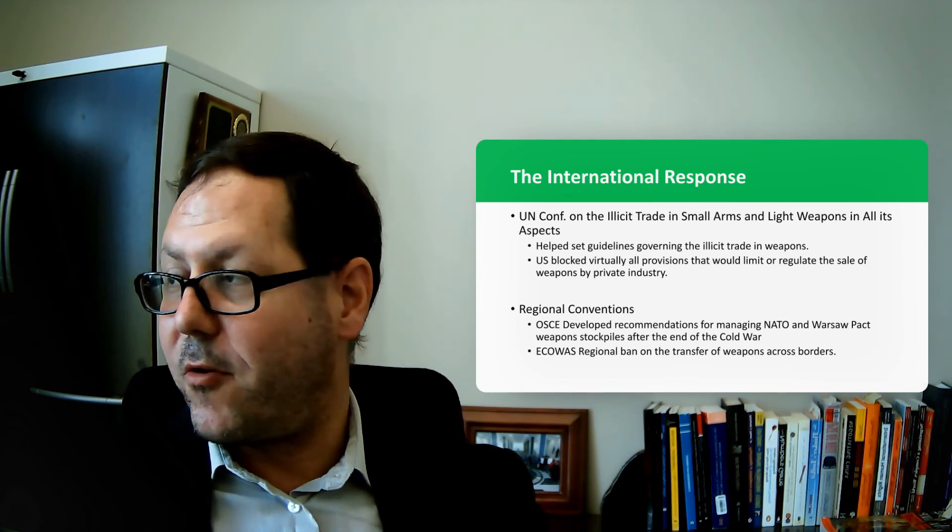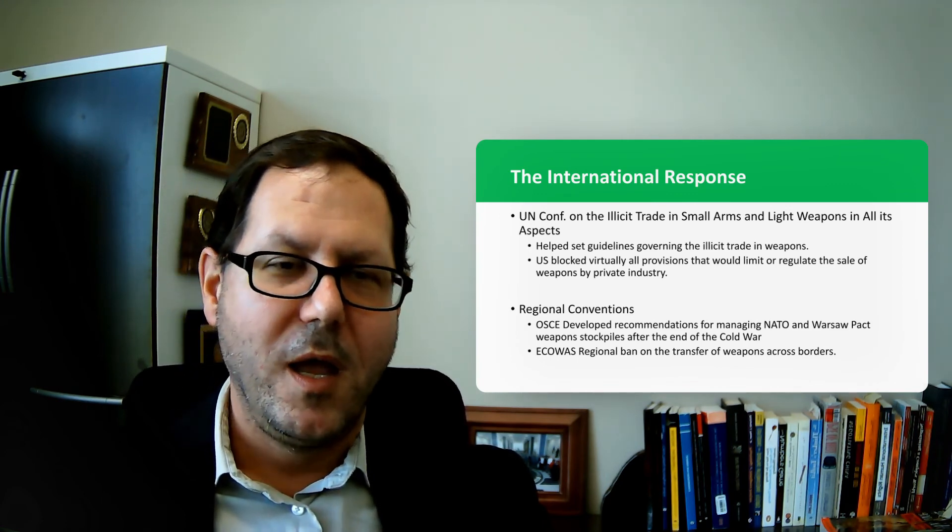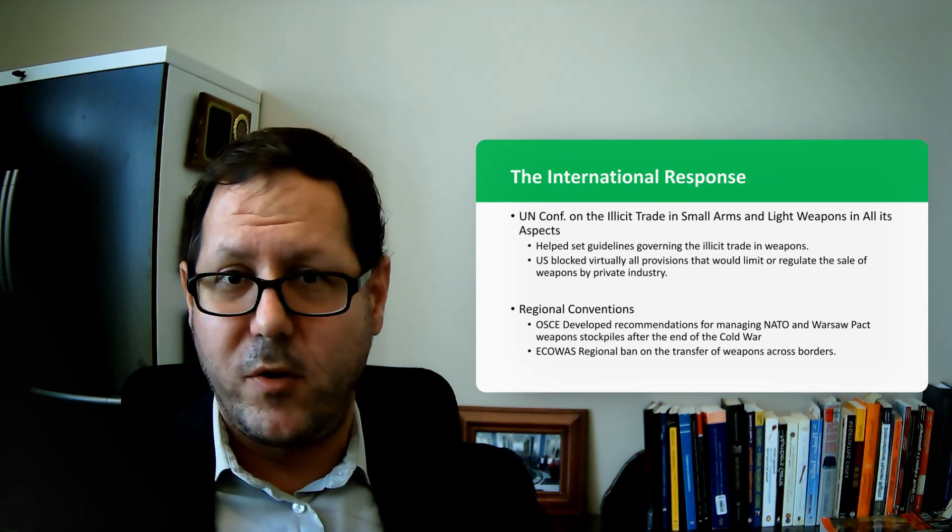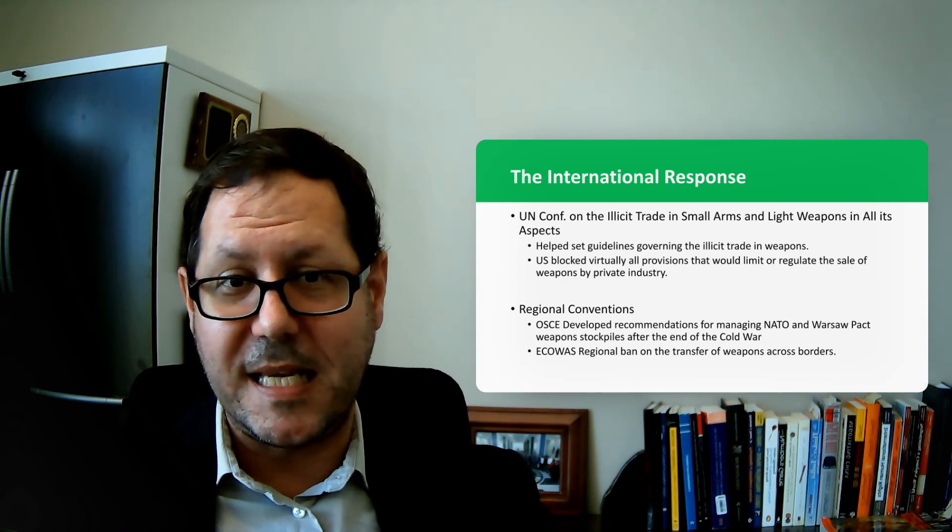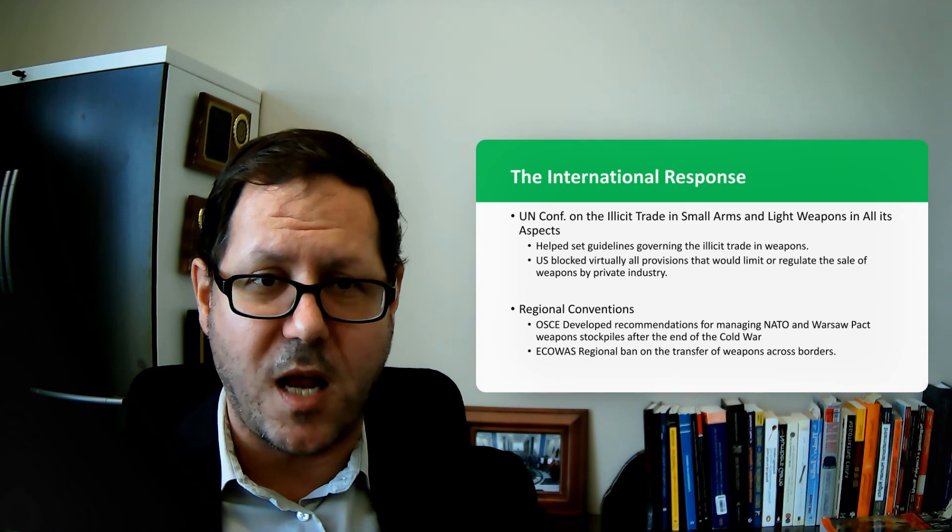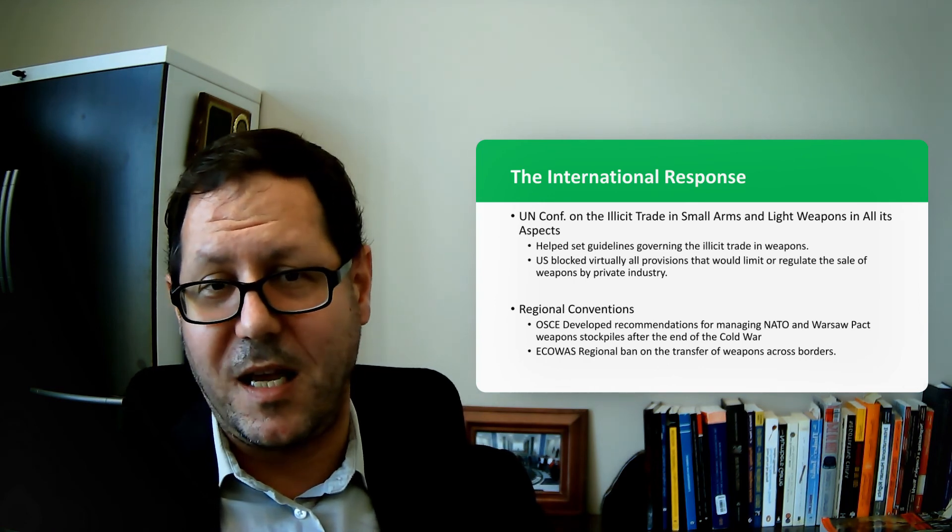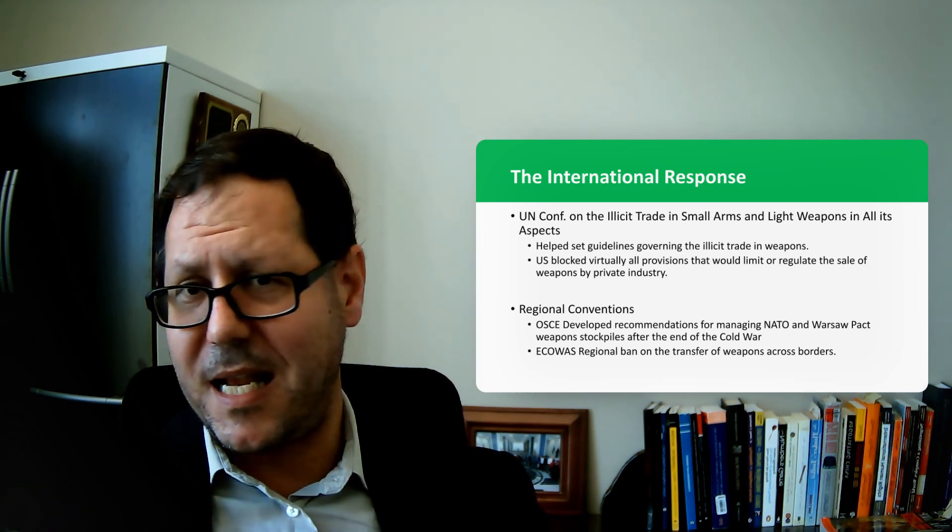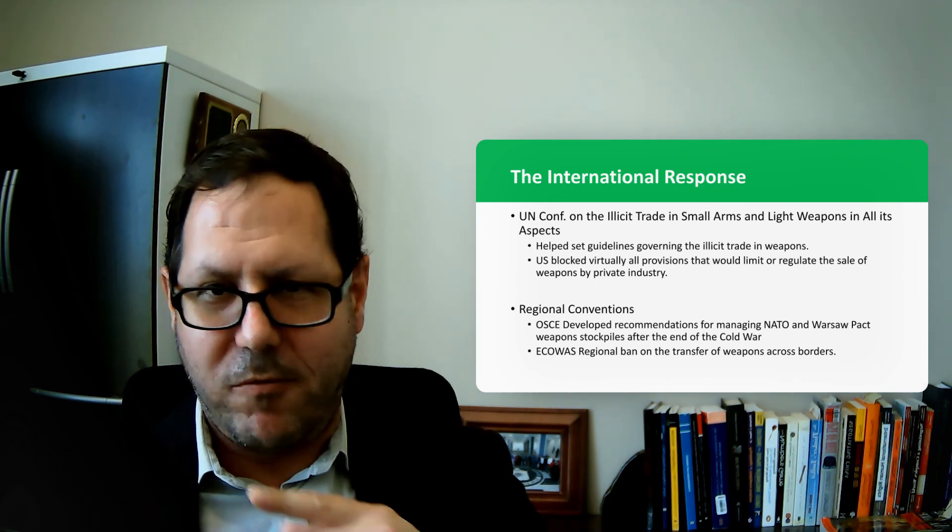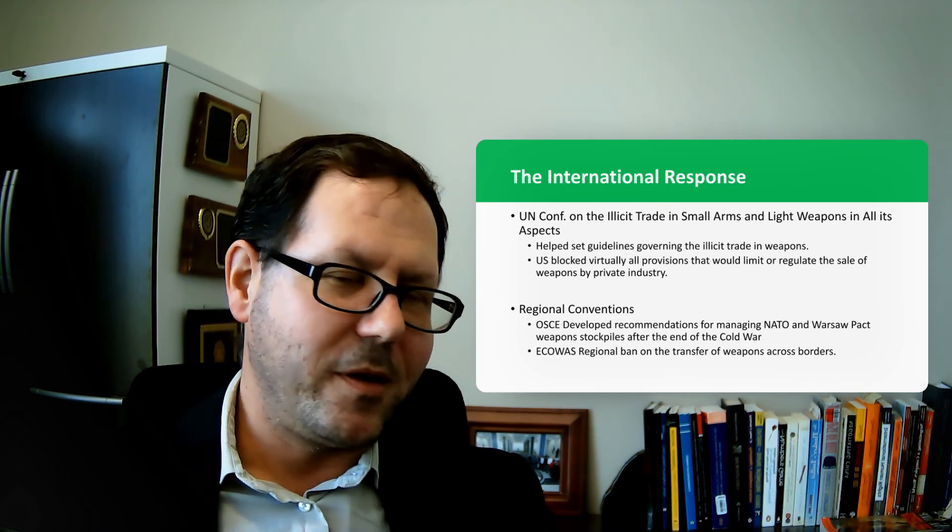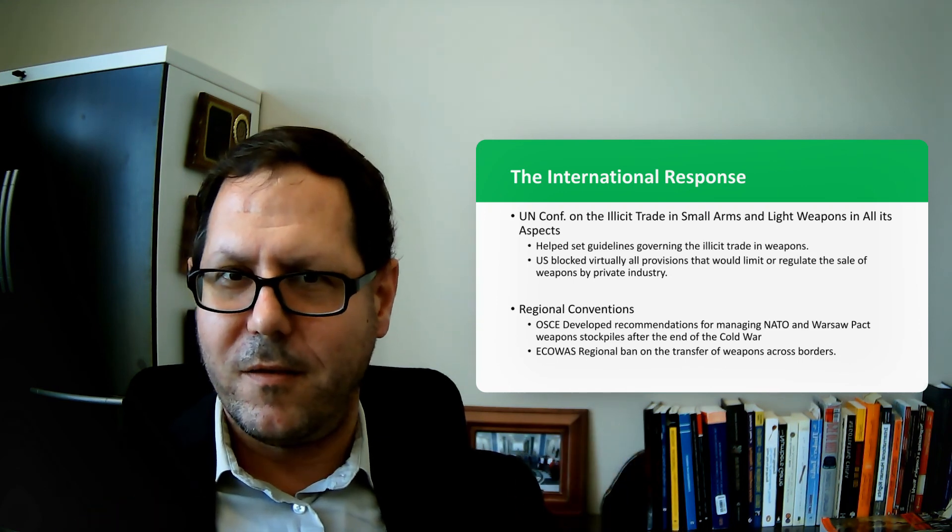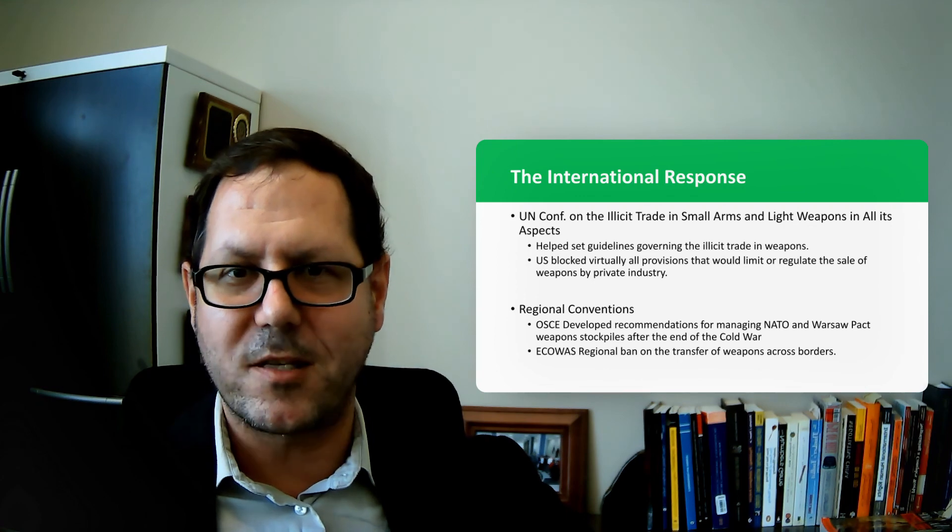There have been other conventions and other treaties and other frameworks that have tried to control different weapons. When the Soviet Union collapsed, there was a great deal of concern about the conventional stockpiles of small and light arms that the Soviet Union and other states had acquired over the years. The OSCE, Organization for Security and Cooperation in Europe, put together a plan and a framework for trying to manage and secure those stockpiles. Likewise, there have been regional treaties. ECOWAS, the Economic Community of West African States, set up a regional ban to try to prevent small and light arms from flooding across borders and moving from conflict to conflict in West Africa, which was certainly a problem in the 1990s and early 2000s. There's been a variety of efforts by states to try to control the movement of these weapons, and these efforts have been of varying success over the years.